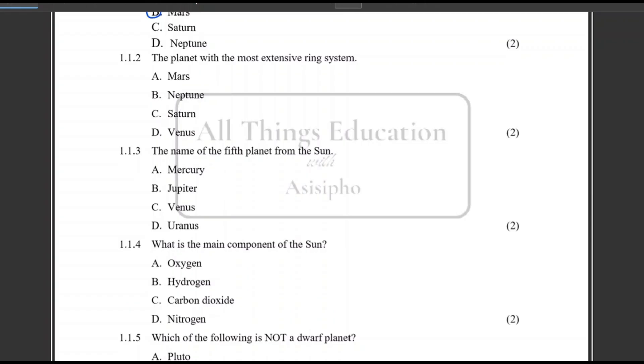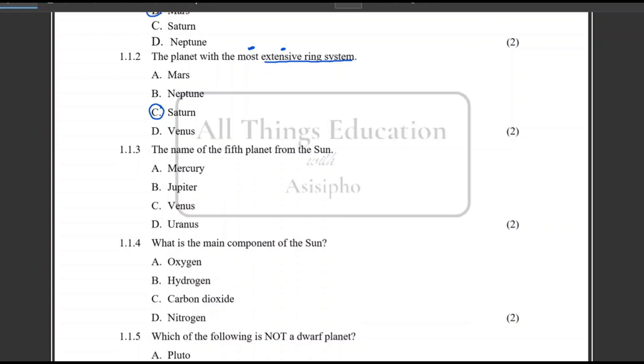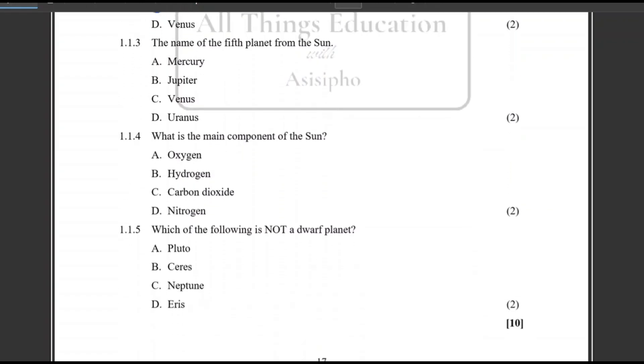Question 1.1.2, the planet with the most extensive ring system. We know that we do have a few planets with ring systems, but the one with the most extensive one is C, Saturn. And in most tests and exams, remember multiple choice, each answer is worth two marks. So those are two marks that you cannot afford to lose.